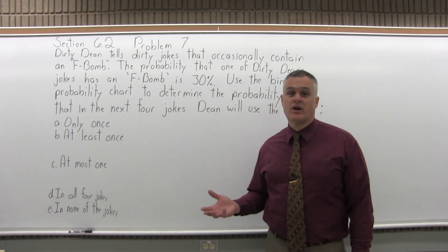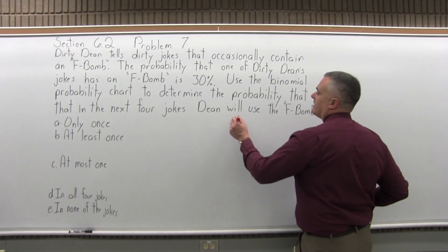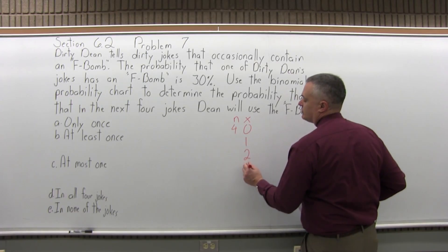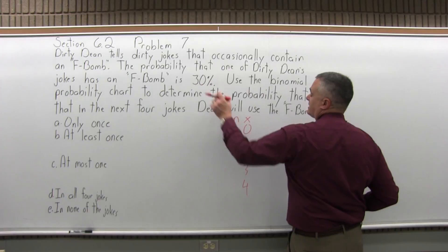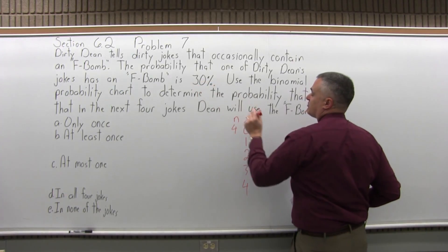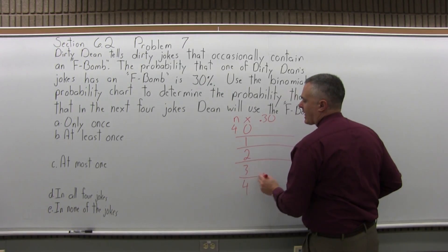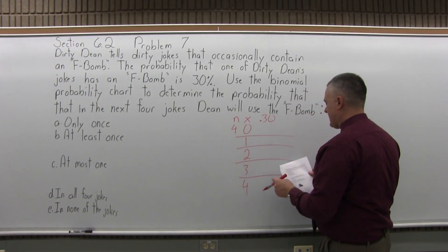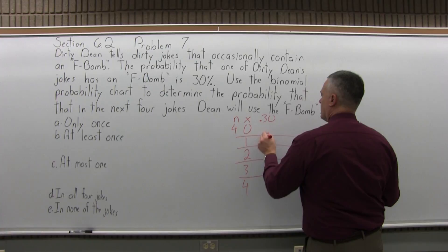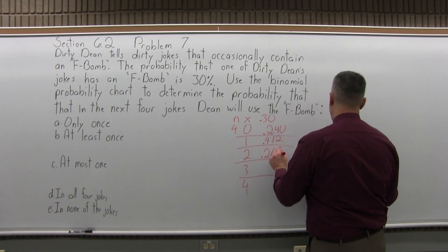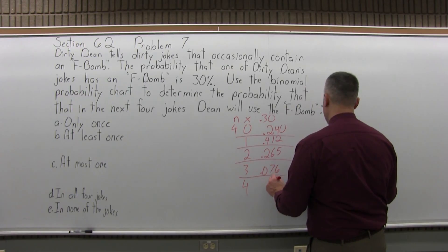To start this off, we need to look in the chart and find the section where n is 4. The possible values for x will be 0, 1, 2, 3, 4. And we want to find the column that says 0.30, because that's the one we want for 30%. I have these numbers already written down: next to 0 is 0.240, next to 1 is 0.412, next to 2 is 0.265, next to 3 is 0.076, and next to 4 is 0.008.